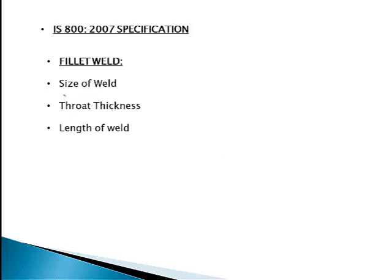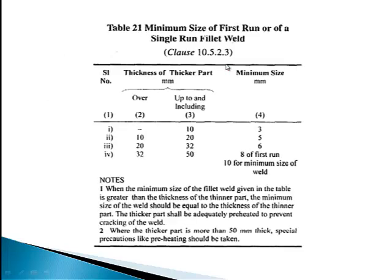For fillet weld, the design depends on the size of weld, throat thickness, and length of weld. First of all, regarding the size of weld — there is a minimum size. As per Table 21 in IS 800:2007, the minimum size of weld is specified.